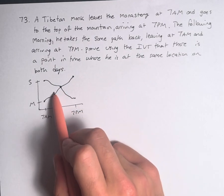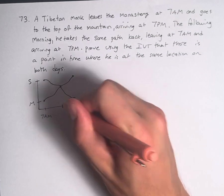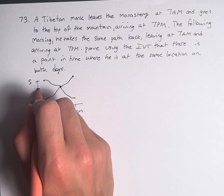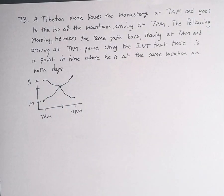there's a point where those paths cross, which means at the same time, both functions are at the same height. So at the same time on both days, he's at the same point.